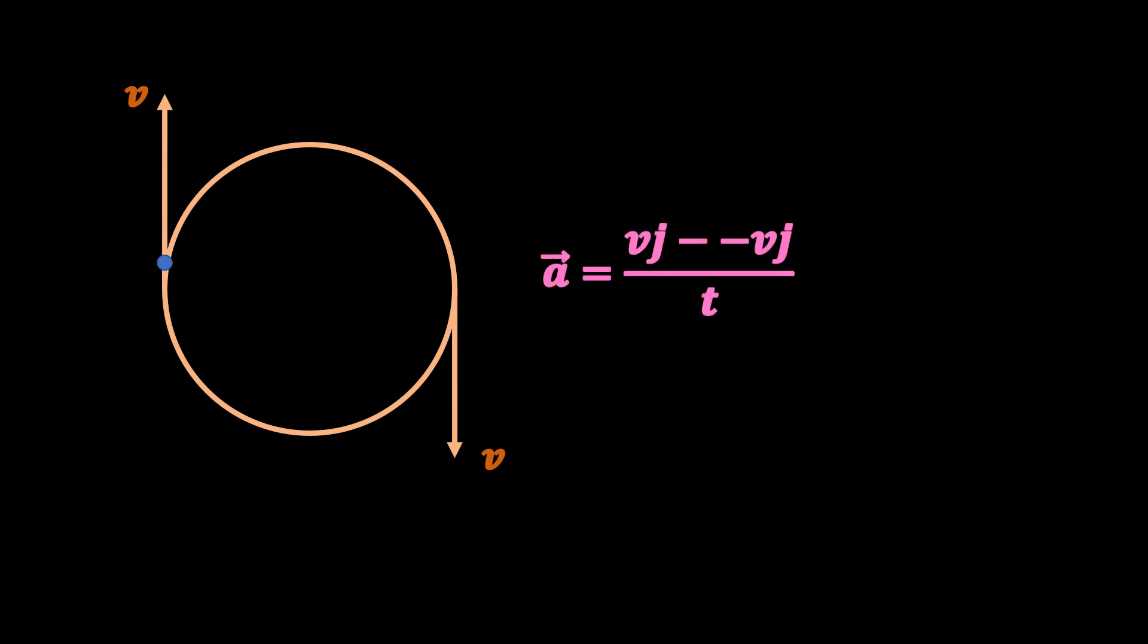For example, let the initial velocity be facing upwards when the particle is at this position, and at this final point be facing downwards. If the particle is traveling at a constant speed v, the acceleration is v in the sense j minus v in the sense minus j divided by time. This gives 2v over t in the sense j. The magnitude of the acceleration is therefore 2v on t. So the particle is accelerating.